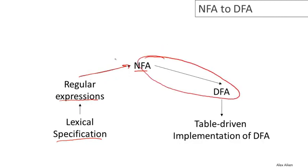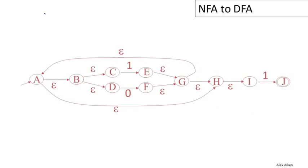And as you might guess, in the final video in this series, we'll talk about the final step, which is the implementation of DFA. So here's the non-deterministic finite automaton we finished up with last time.